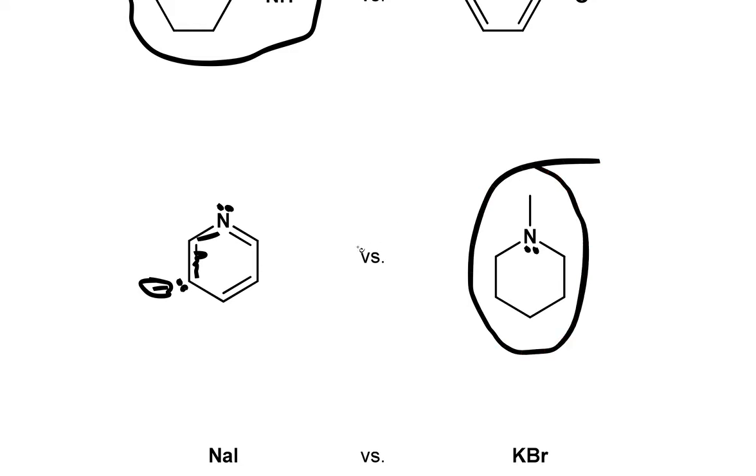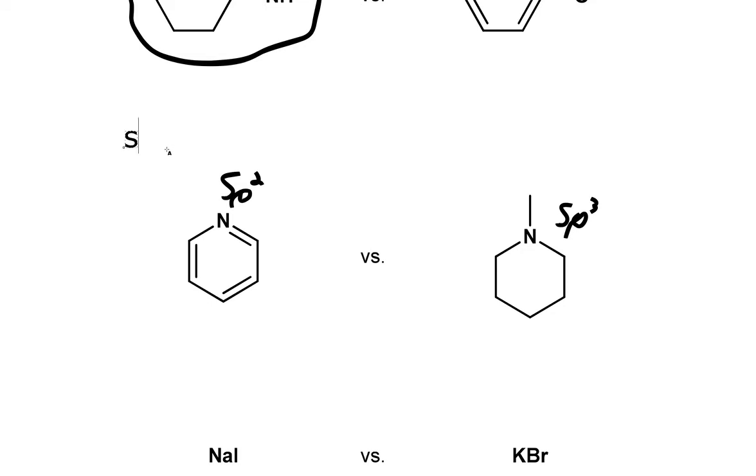And actually, a better explanation for this would be, this nitrogen has SP2, while this nitrogen has SP3. Acidity increases when we have more S character, such as SP2 and SP. Those are more acidic. But basicity decreases as S increases. So let me write this down so it's actually comprehensible. SP3, SP2, SP. Okay, so acidity increases with increasing S character. But basicity decreases.